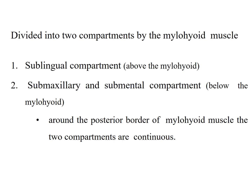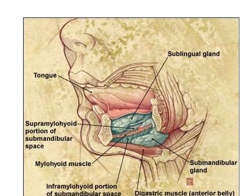One compartment is the sublingual compartment, which is above the mylohyoid, and the other is the submaxillary and submental compartment, which lies below the mylohyoid. However, the two compartments are continuous around the posterior border of the mylohyoid muscle. This picture shows the mylohyoid muscle and the two compartments — the upper sublingual and the lower submaxillary and submental compartments, which join posteriorly.